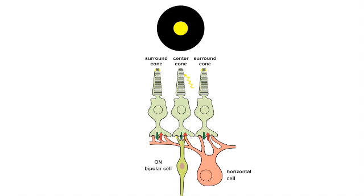The horizontal cell is excited by this neurotransmitter and continues to send high levels of inhibitory feedback to all the cones. This inhibitory feedback causes the center cone to release even less neurotransmitter. The on-bipolar cell, post-synaptic to the center cone, is maximally excited as it reverses the sign of the cone.